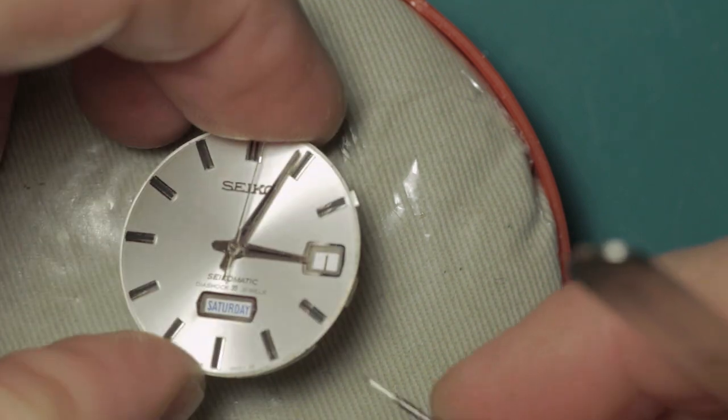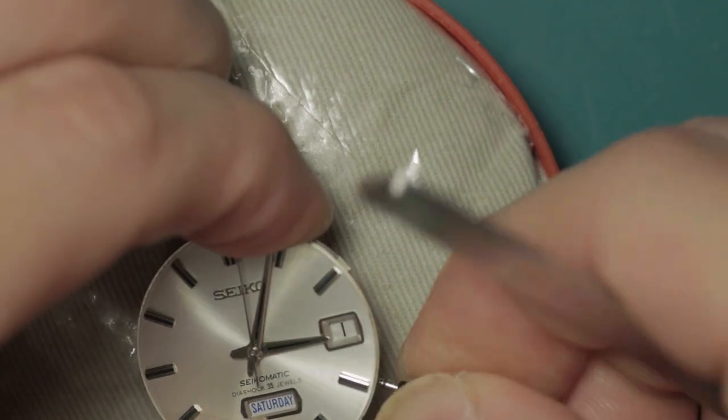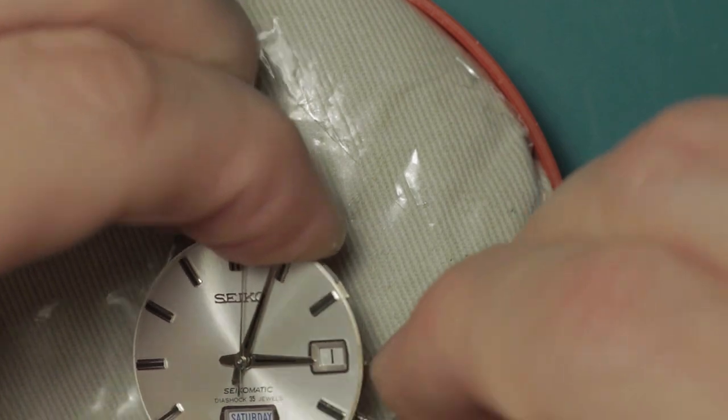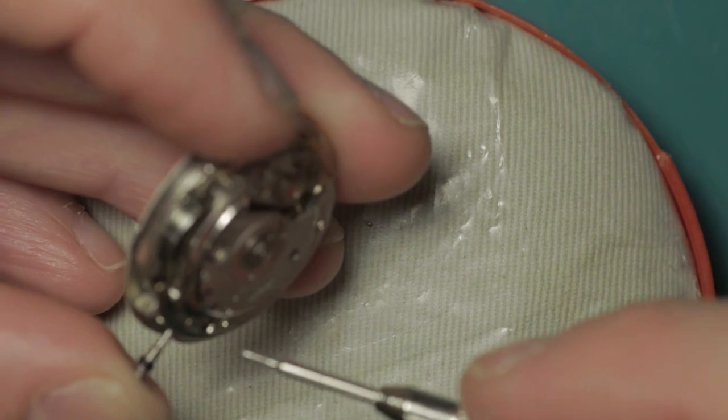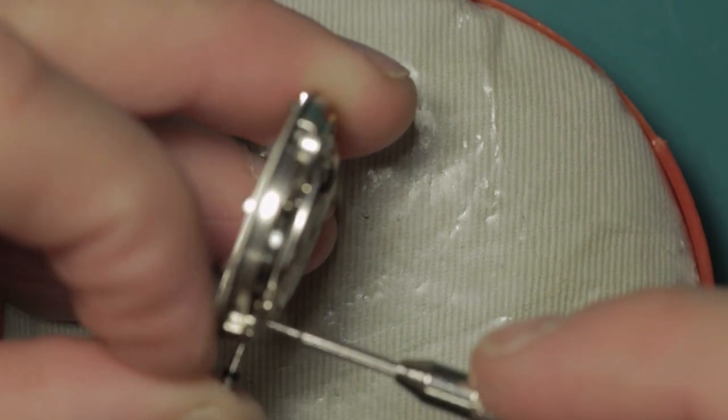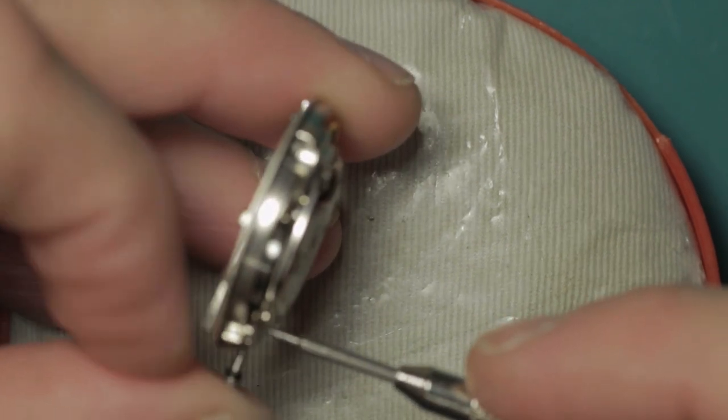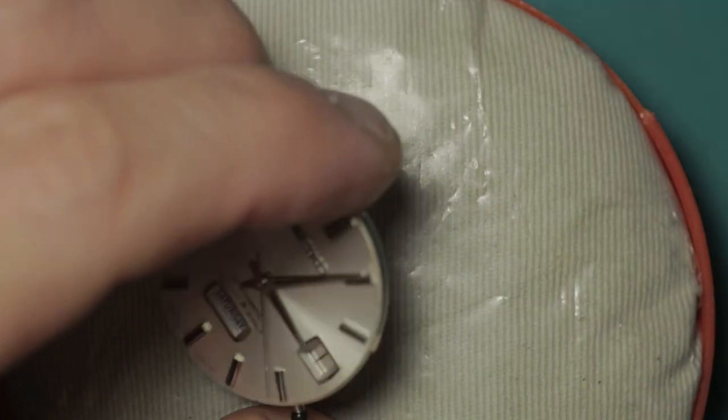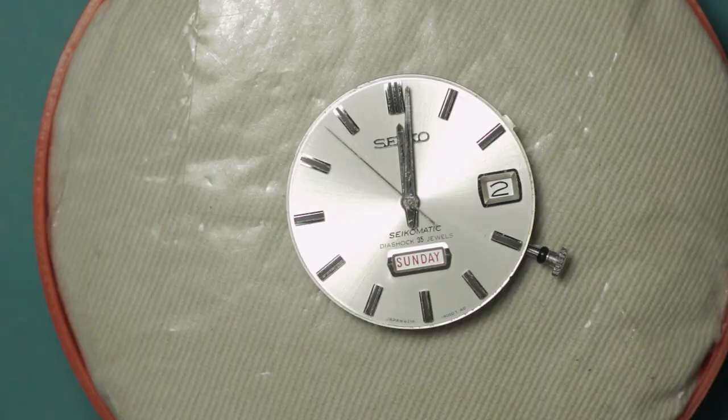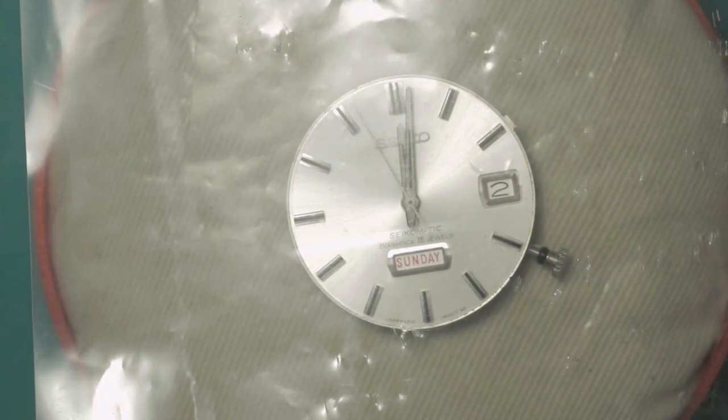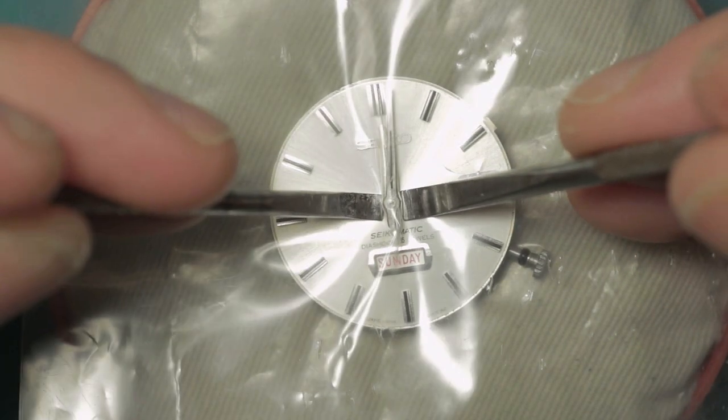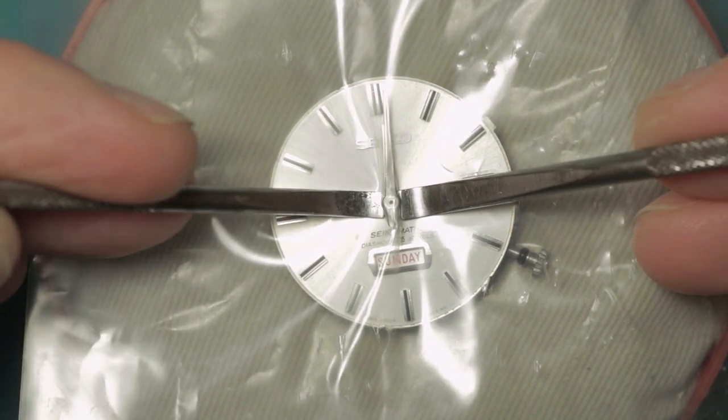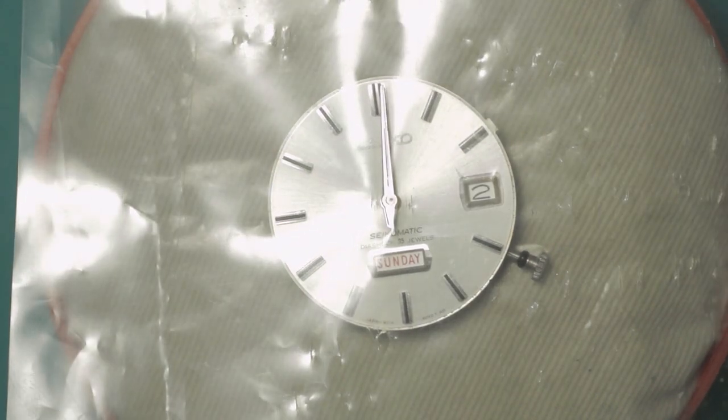We'll get the hands aligned and remove them, and then we can remove the dial. The stem is a little bit reluctant to go in, so when they're like this I like to maintain a bit of pressure while I press the stem release button. I'll bag over there to protect the dial while we slip the hand levers underneath and tease off the hands.